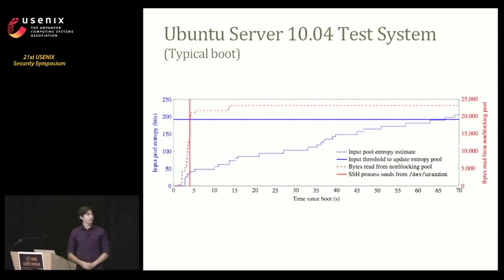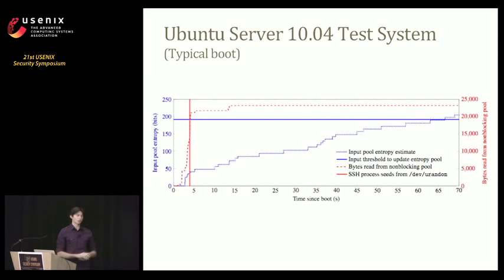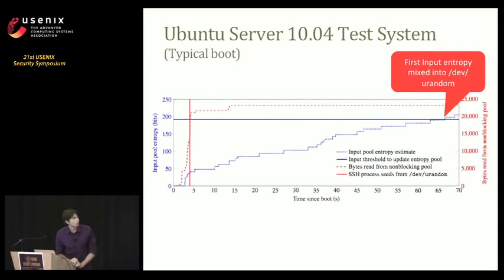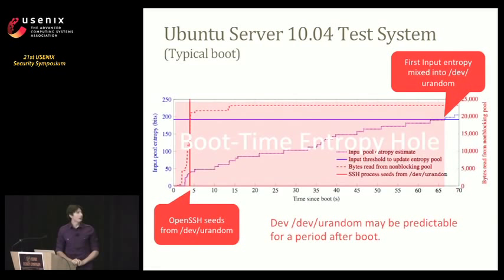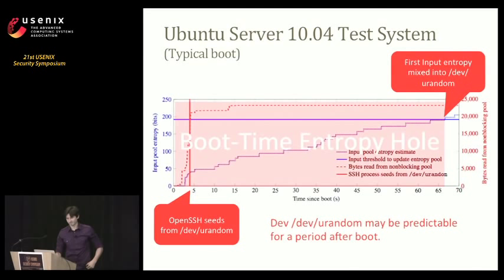Here we're looking at a graph from an instrumented kernel we wrote that tracks randomness as it is mixed into the Linux kernel — a typical Ubuntu server desktop system. Right around 65 seconds is where we reach 192 bits of entropy. So before 65 seconds, if you query /dev/urandom — which many things do — you have deterministic randomness on your first boot. On subsequent boots, randomness is saved to disk and reloaded. But on first boot, for these first 65 seconds — what we call the 'boot entropy hole' — the red line showing where OpenSSH pulls from /dev/urandom is about 4 seconds, a good minute before we reach 192 bits.